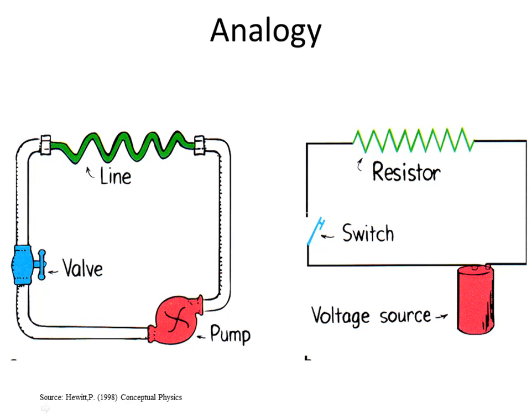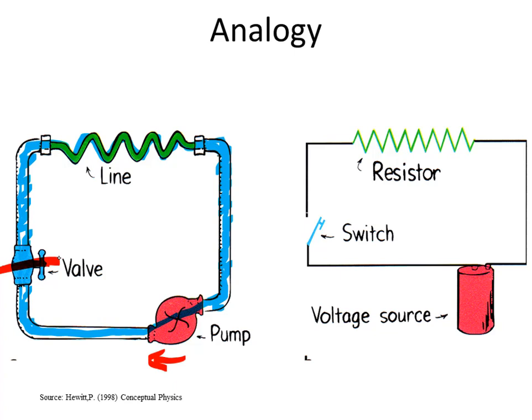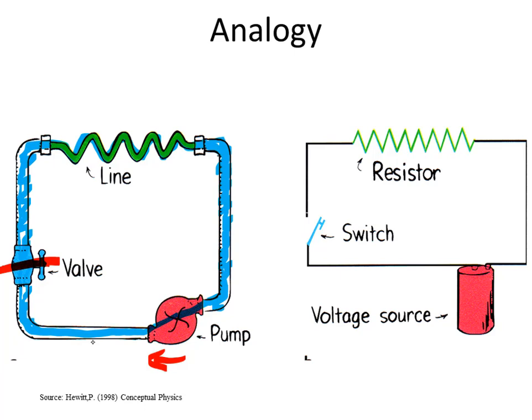Now let's say we close the tap — we close the valve. What that does is put an obstruction in the way of the water; it blocks the water. So even though the pump tries to push the water around, the water cannot move because it's blocked by the closed tap. If we close the tap as shown, and the pump carries on trying to push, where will the water move? None of the water can flow. You might think the water before the closed tap could move — but no. No water will flow, because water is incompressible. If it's blocked at one point, none of the water can flow anywhere.